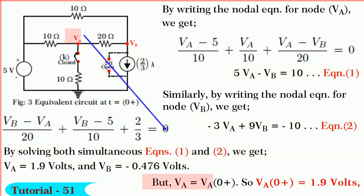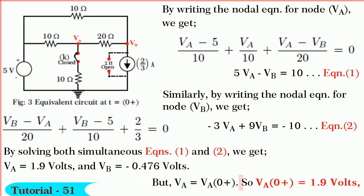By solving both simultaneous equations, we get φA equals 1.9 volts and VB equals minus 0.476 volts. So φA(0+) equals 1.9 volts. It is so easy, isn't it, friends?